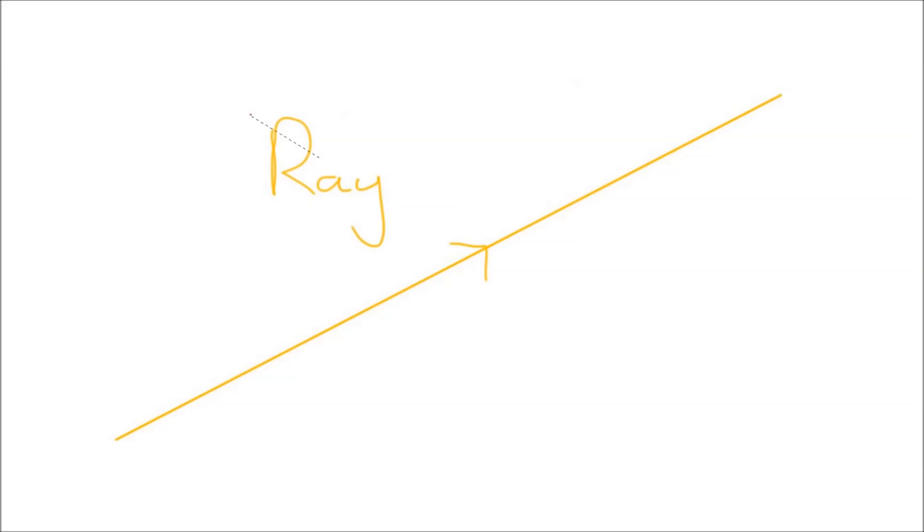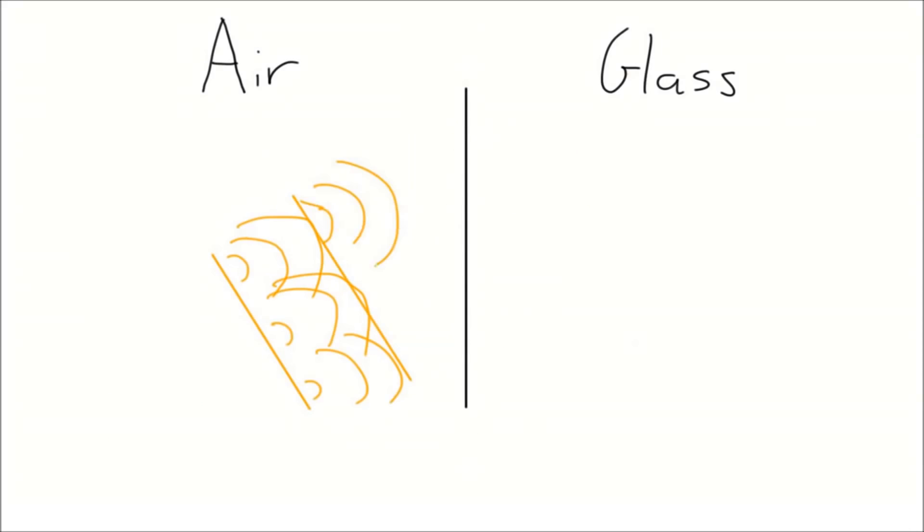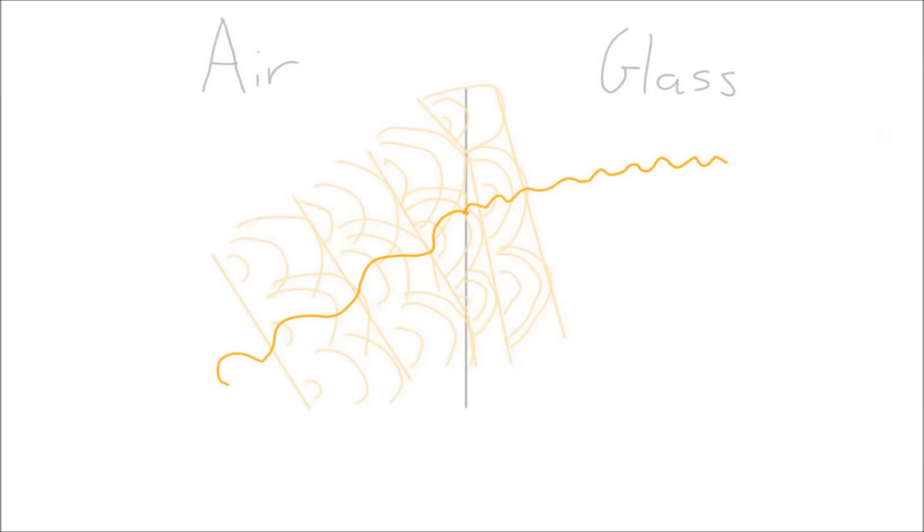Physicists realize that these two phenomena could be explained by considering light as a wave. When a wave passes through an interface where it moves slower in one substance than another, it deflects. The same thing happens when a water wave passes through a container of varying depth.